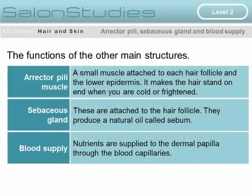The functions of these other main structures. The erector pili muscle is a small muscle attached to each hair follicle and to the lower epidermis. It makes the hair stand on end, particularly when you are cold or frightened. The sebaceous glands are attached to the hair follicle and produce a natural oil called sebum, which is secreted onto the surface of the skin. Nutrients are supplied to the dermal papilla through the blood capillary network.